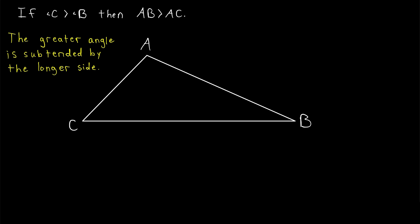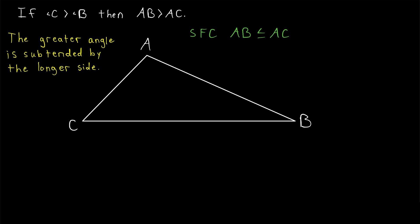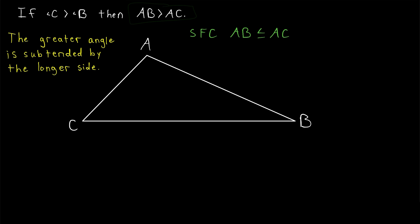One quick way to prove this result is by contradiction. We're trying to prove that AB is greater than AC, so let's suppose for a contradiction that AB is less than or equal to AC instead. If this leads to a contradiction, then the opposite must be true, namely AB is greater than AC. So is it possible that AB is less than or equal to AC? Well, we can break it into cases.